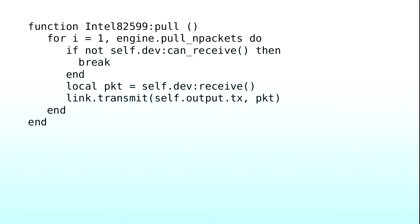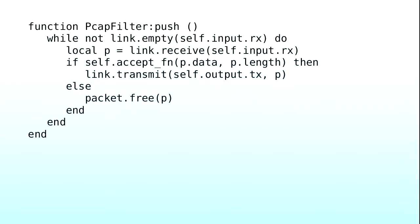We have a device driver written in Lua — there's a ring buffer on that device and we're pulling packets off the ring buffer. Similarly, push functions typically empty all the incoming packets on their link. Until the input link is empty, I receive a packet, and then if that predicate function — compiled from the tcpdump language as 'TCP port 80' — returns true, I transmit it on the output; otherwise I drop it. That's all there is to breaths.